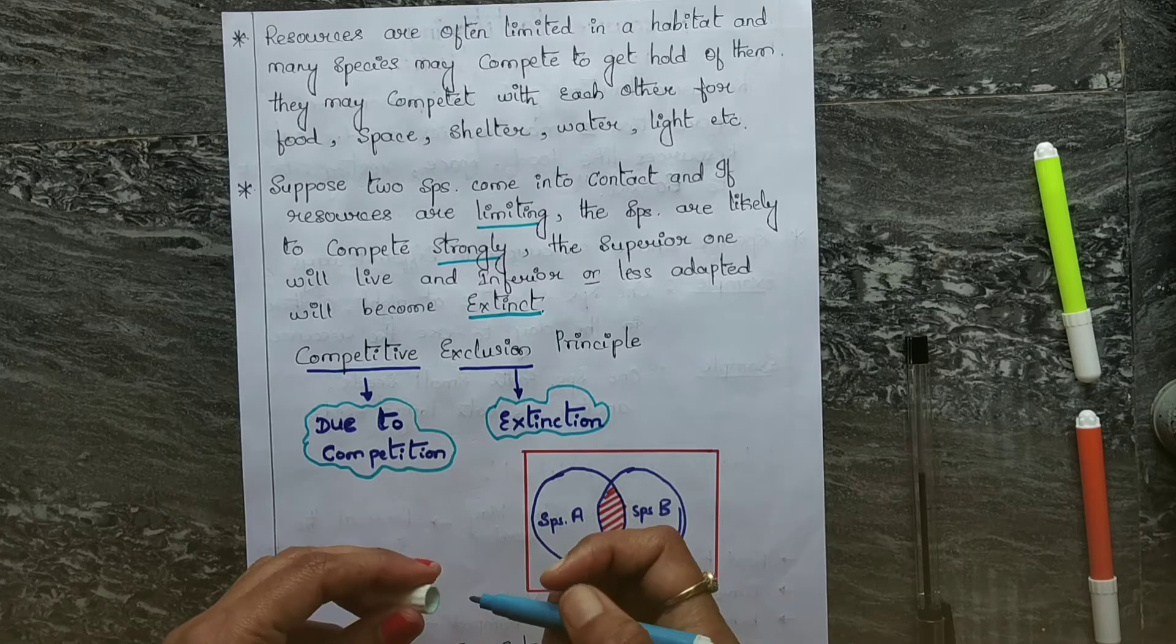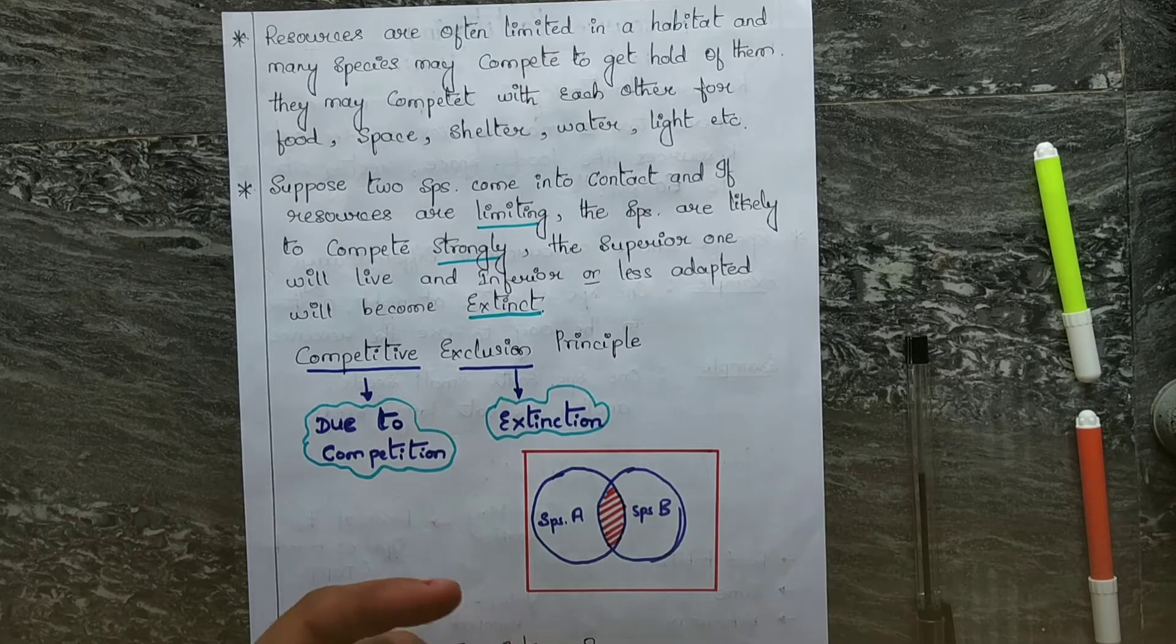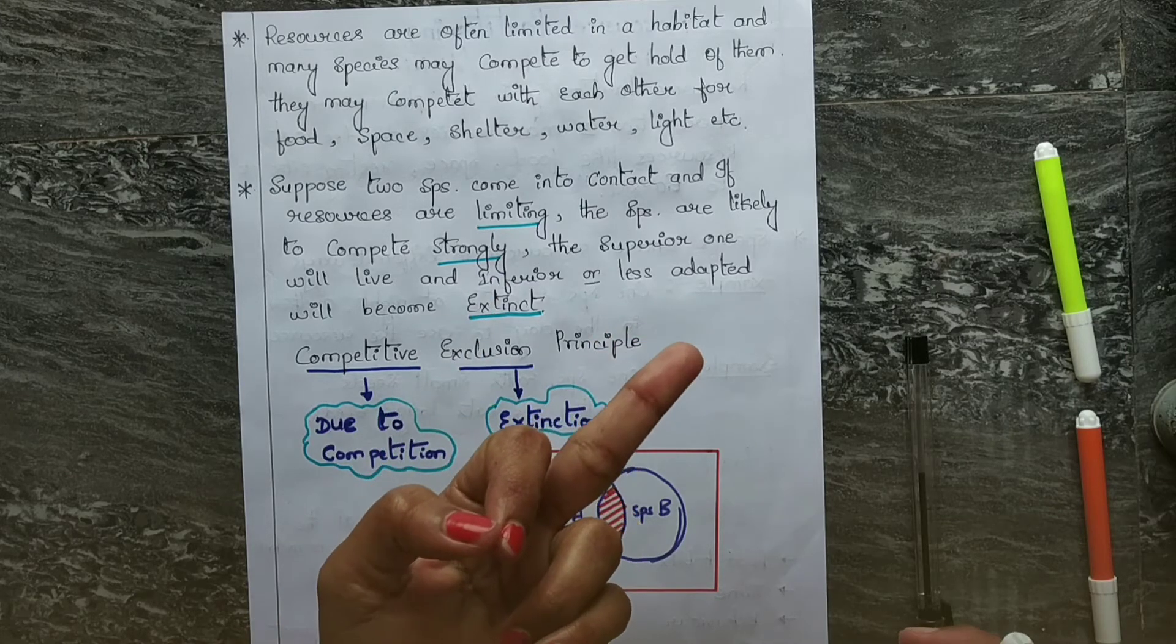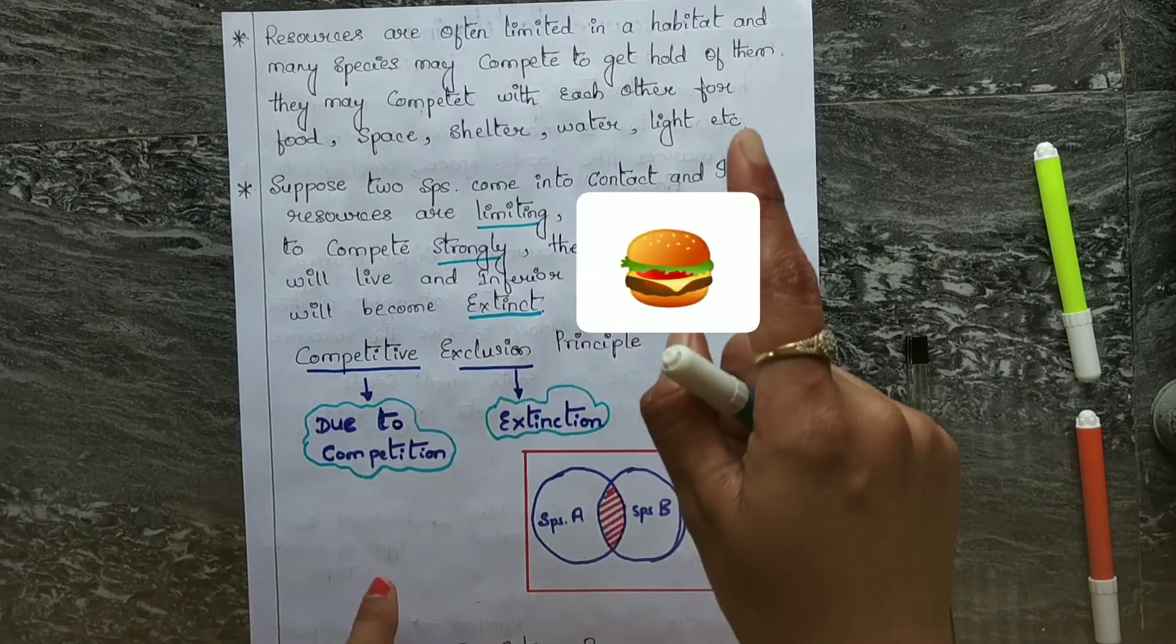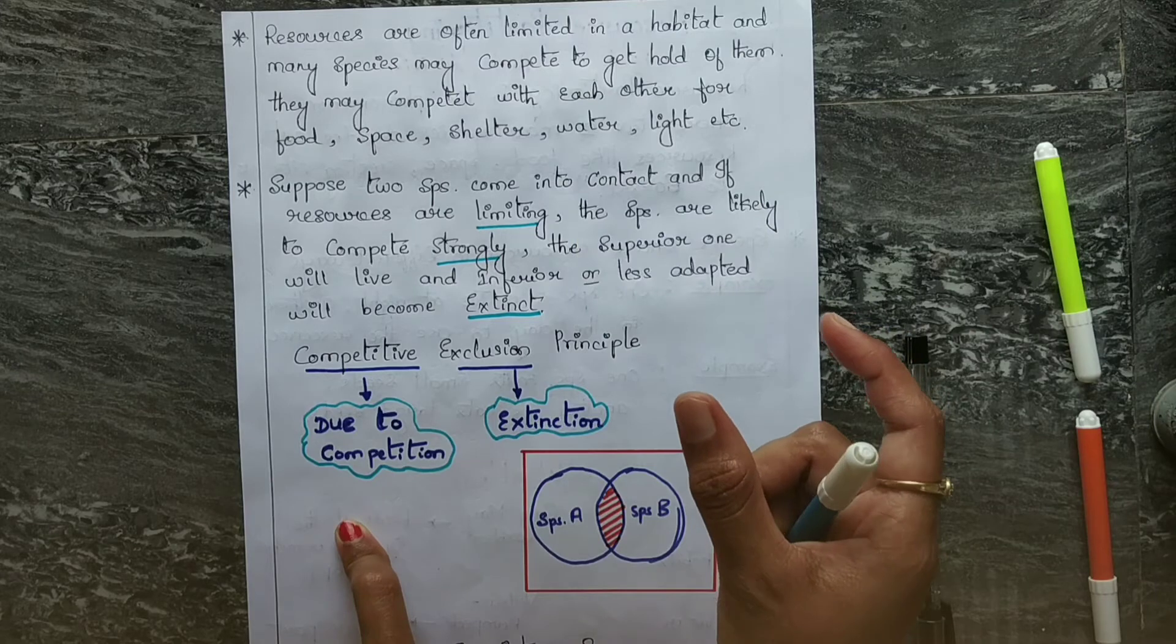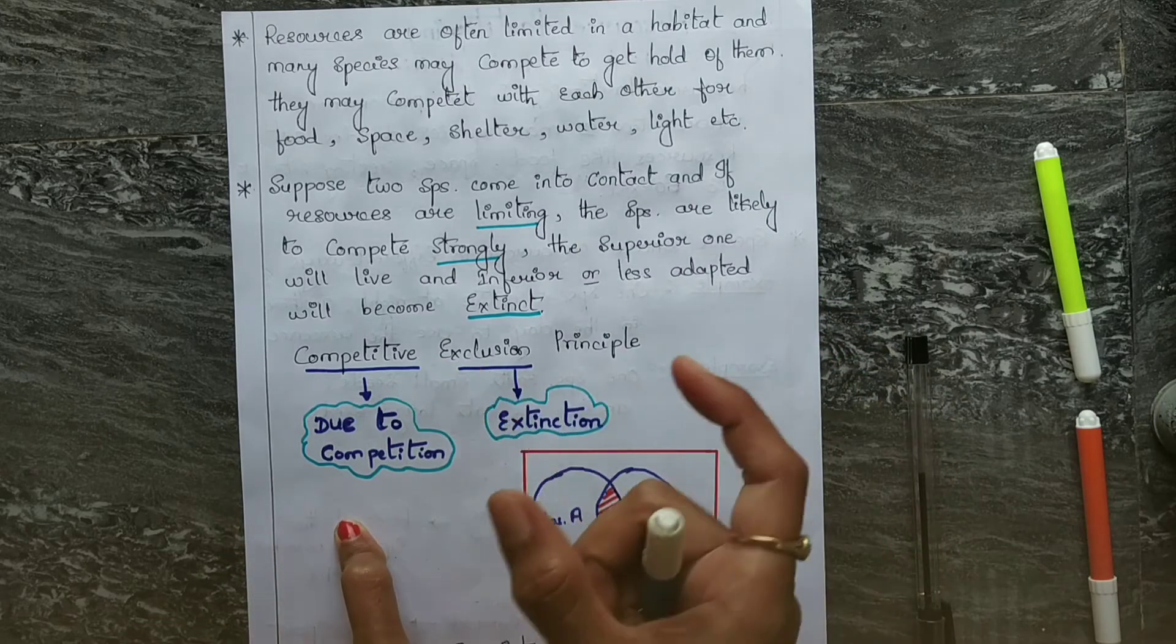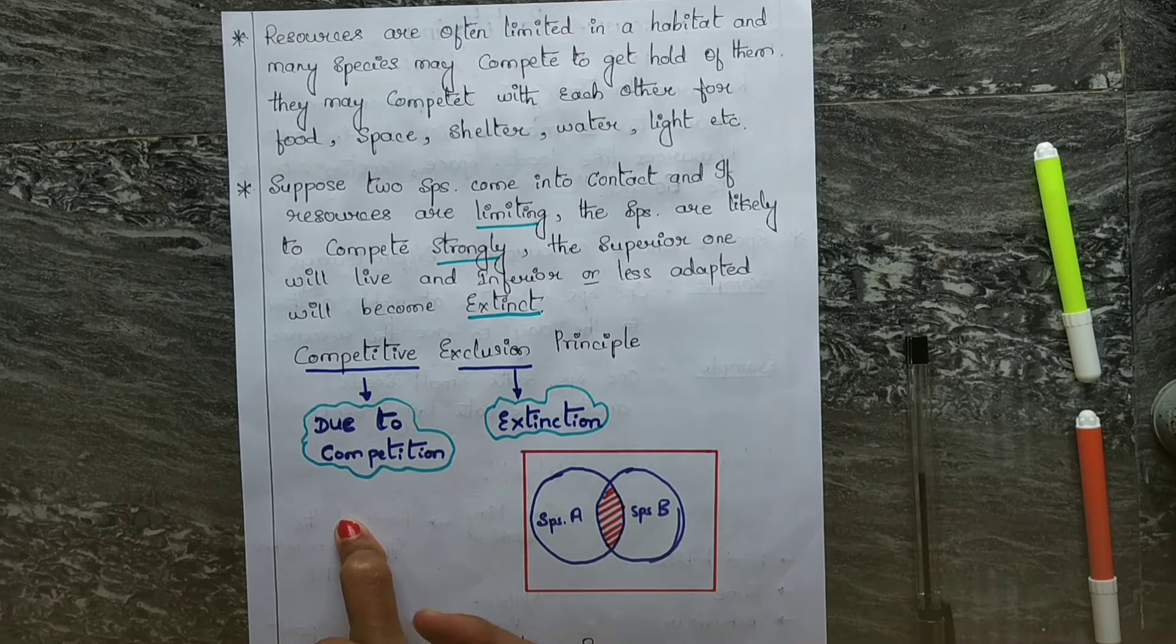To make you understand, I gave one simple example about a burger - a girl and a boy competing for the same burger. The stronger one will get the burger and the other one will not get the burger. That is the scenario.